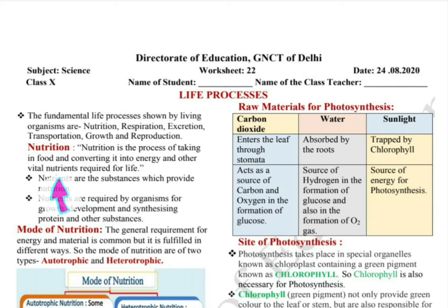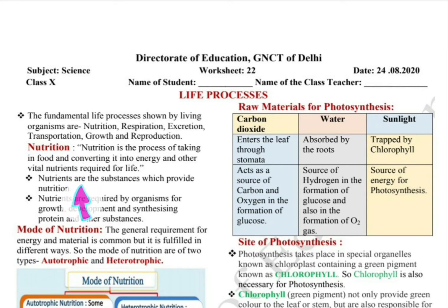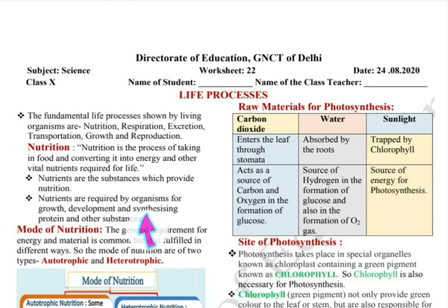There are five nutrients, which we have studied in sixth class — five components of food or nutrients: proteins, carbohydrates, fats, vitamins and minerals. These five nutrients are required for life. Nutrients are the substances which provide nutrition. Nutrients are required by organisms for growth, development and synthesizing protein and other substances.